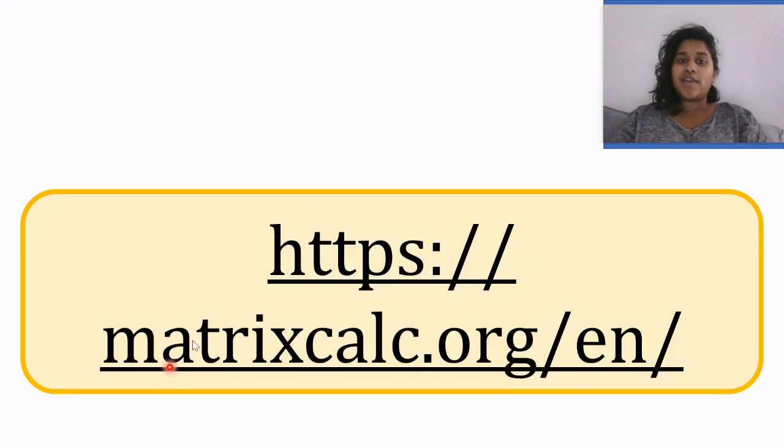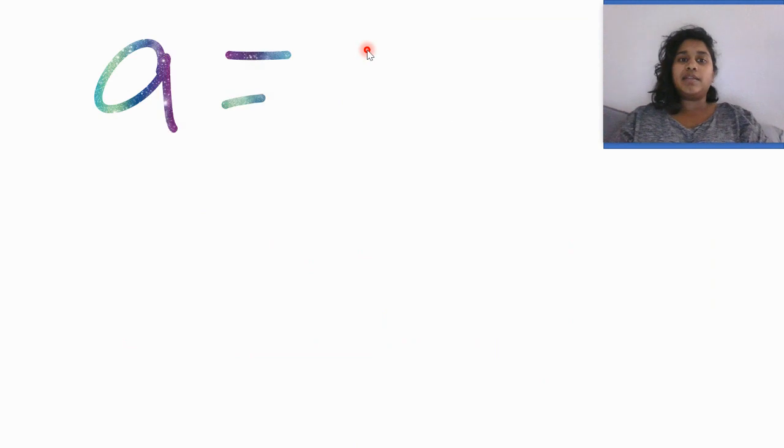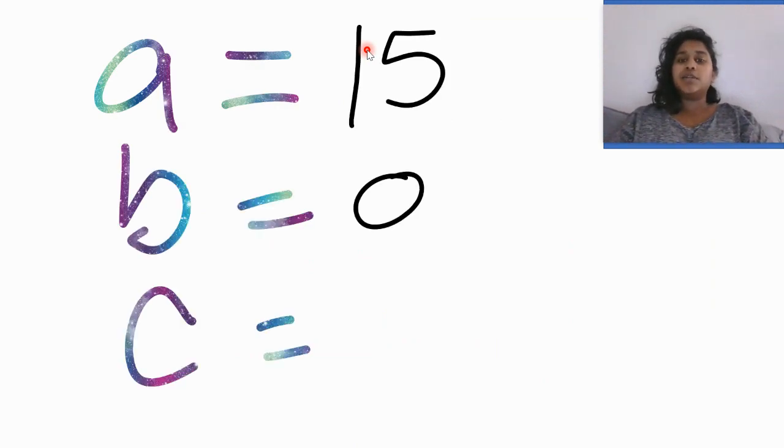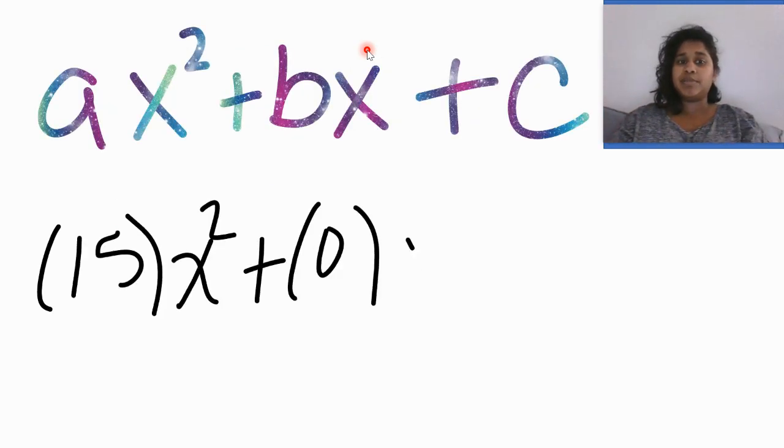We could have gotten that information right here. So if I go back, I plug in that information. A is 15, B is zero, C is zero, and then we throw that back into our standard A x squared plus B x plus C equation, simplify it down,